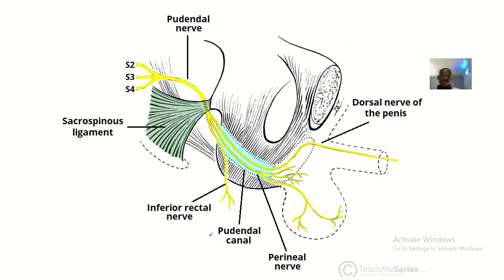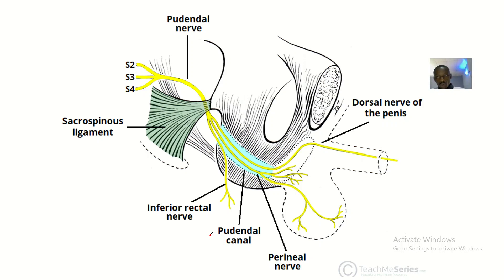We are still on our perineum anatomy. I will be talking about a concept that will actually lead us to talk about the pudendal nerve block, so we'll be looking at the canal or the opening through which the pudendal nerve actually goes through, so that I can give the dorsal nerve of the penis or dorsal nerve of the clitoris, and supply the regions of the genitals.